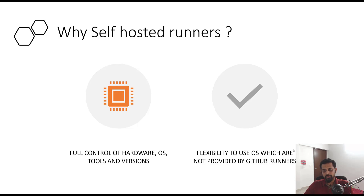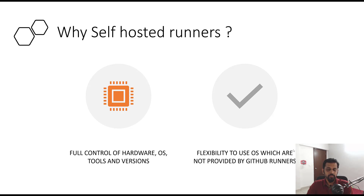Why do we need self-hosted runners? With GitHub runners you don't have full control over the operating system or the toolsets. For example, if you're using Ubuntu latest managed by GitHub, you don't control which version is used. If you want more control over the hardware, operating system, and tools — such as the .NET version — then self-hosted runners are a good option. It also gives flexibility to use operating systems or specific Linux versions not provided by GitHub runners.